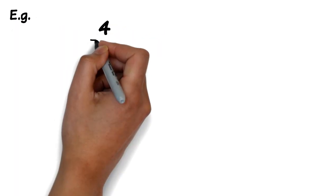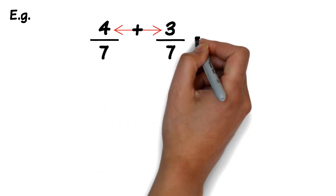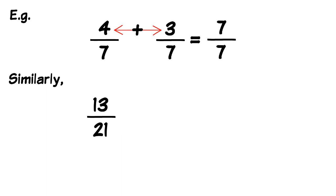Let's take a look at another example. So for instance, 4 over 7, its complement partner would be 3 over 7 since 4 plus 3 equals 7. Similarly, 13 over 21, its complement partner would be 8 over 21 since 13 plus 8 equals 21.